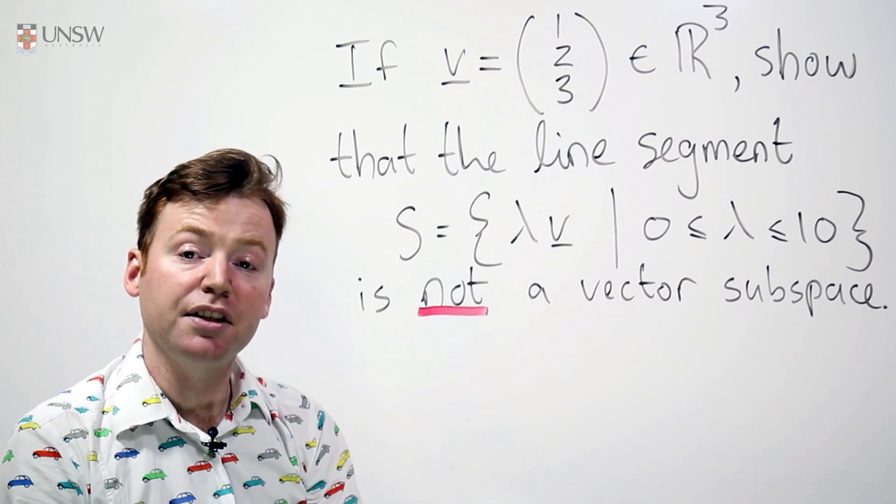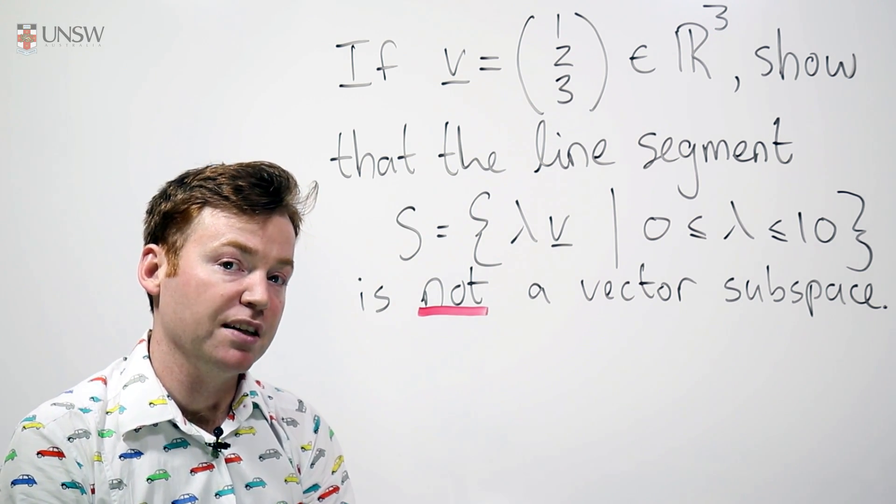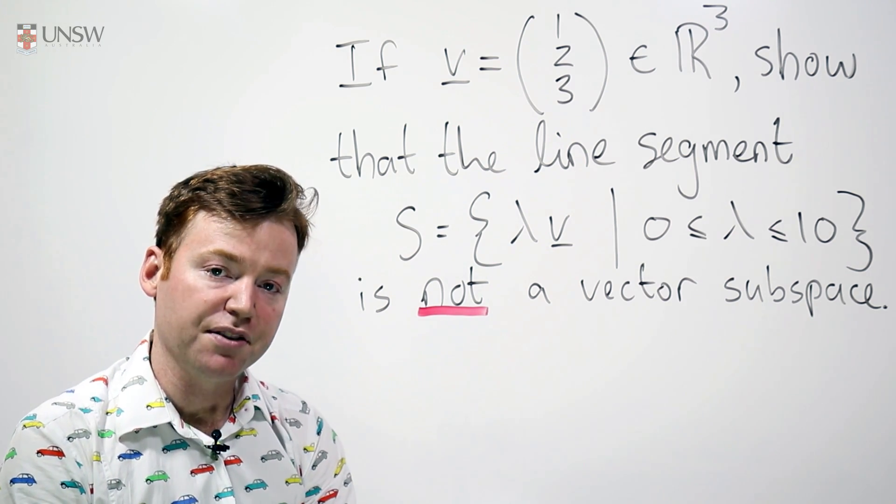It does actually contain 0, 0 is in S, so that's the first possible vector space axiom put aside. That one's actually satisfied.